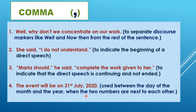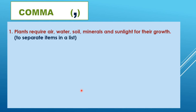Here is another use: commas separate items in a list. For example: 'Plants require air, water, soil, minerals, and sunlight.' Whenever the word 'and' comes, there is no comma before it. But before that, when there is a long list, you use commas to separate the items.